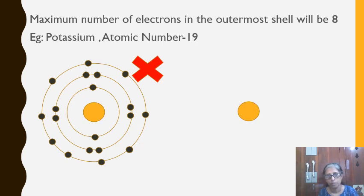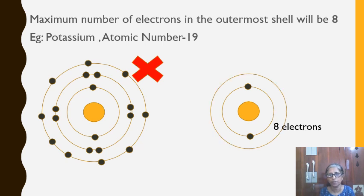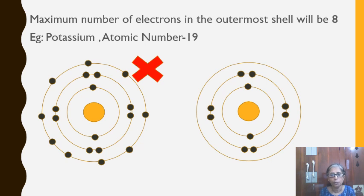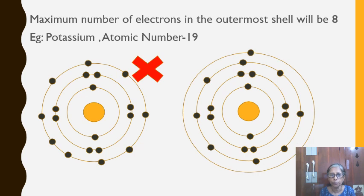So for potassium: the first shell gets 2 electrons, the second shell gets 8 electrons, the third shell gets 8 electrons, and the fourth shell gets 1. We have split the 9 into 8 and 1 — 1 goes to the last shell and 8 goes in the previous one.